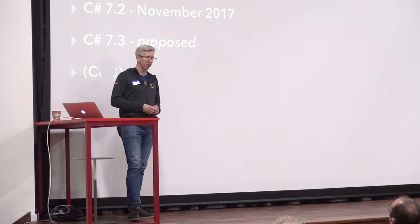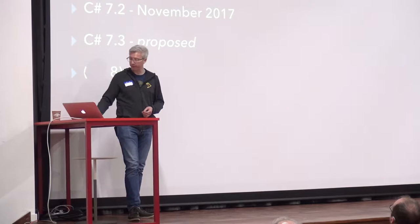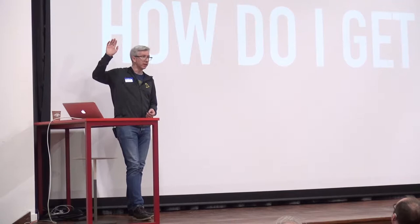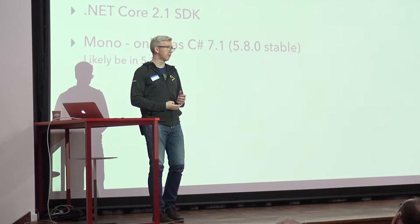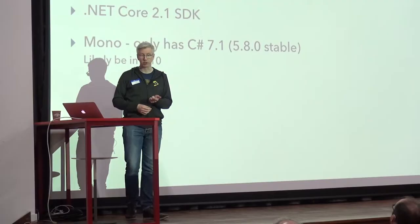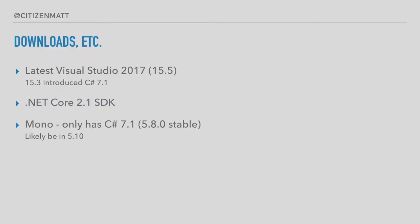How do you get these point releases? You've probably already got it. If you've been keeping your Visual Studio up to date, you'll most likely have the latest C# compiler. Visual Studio 15.3 introduced C# 7.1, and 15.5 introduces C# 7.2. If you've got the latest .NET Core SDK, then you've already got C# 7.2 as well — I think 2.1 means it's for .NET Core 2.0.